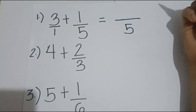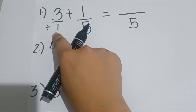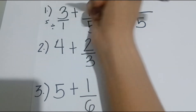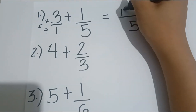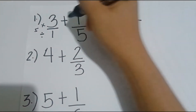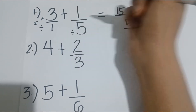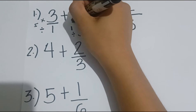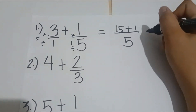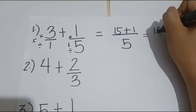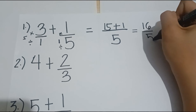After determining the LCD, we divide 5 divided by 1, the result is 5. Then we multiply 5 by the numerator, which is 3. That gives us 15. Then, copying the operation — addition — 5 divided by 5 is equal to 1, and 1 times 1 is equal to 1. We add 15 plus 1, which gives us 16. Then we copy the denominator, which is 5.